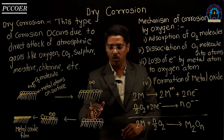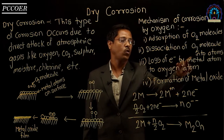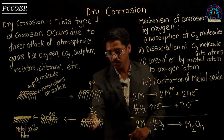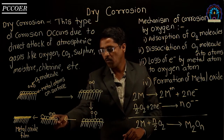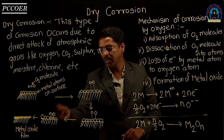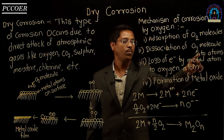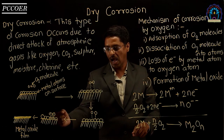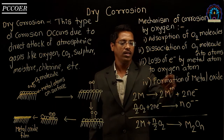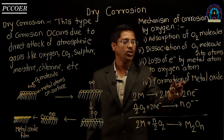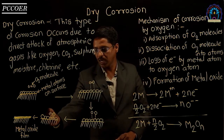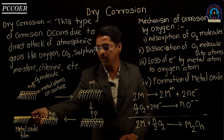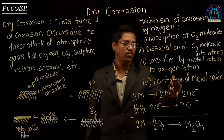After the formation of oxygen atoms on the surface of the metal, the third step occurs: loss of electron by the metal atom to the oxygen atom. The metal atom transfers electrons to oxygen, resulting in the formation of a positively charged metal ion and a negatively charged oxygen ion. The fourth step is the formation of metal oxide by the union of these ions, producing a thin metal oxide layer.